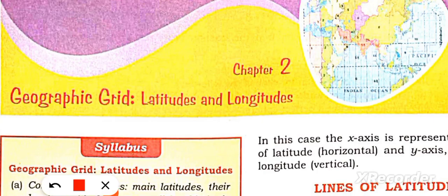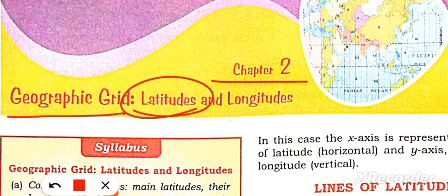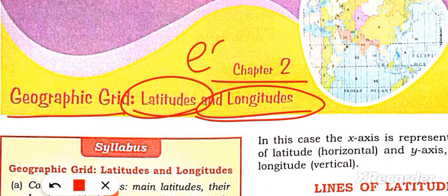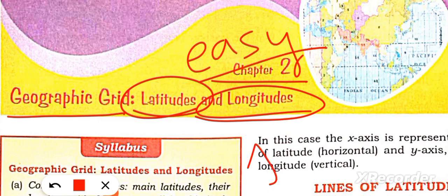Hello students. In this video we will discuss chapter number 2, Geographic Grid, Latitudes and Longitudes. This is the most easy chapter of class 9, and probably the most interesting.